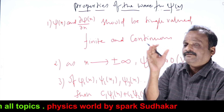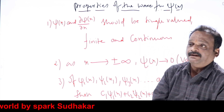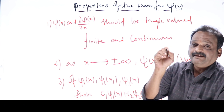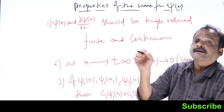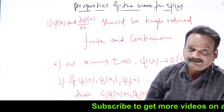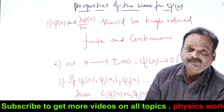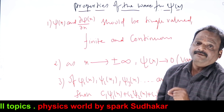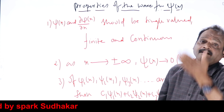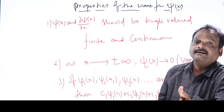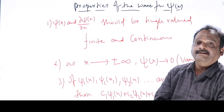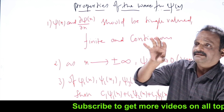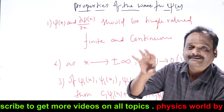All mathematical functions are not suitable as wave functions because we have a condition: psi squared of x should denote the probability of finding the particle — that is how it has been postulated. And psi contains entire information; from psi only we should get all the physical aspects of the particle. So all mathematical functions are not suitable as wave functions.